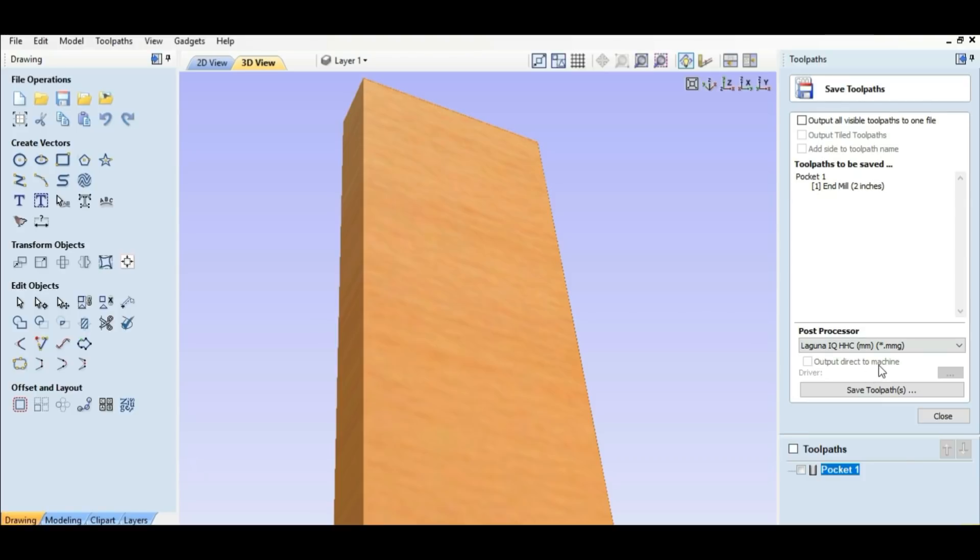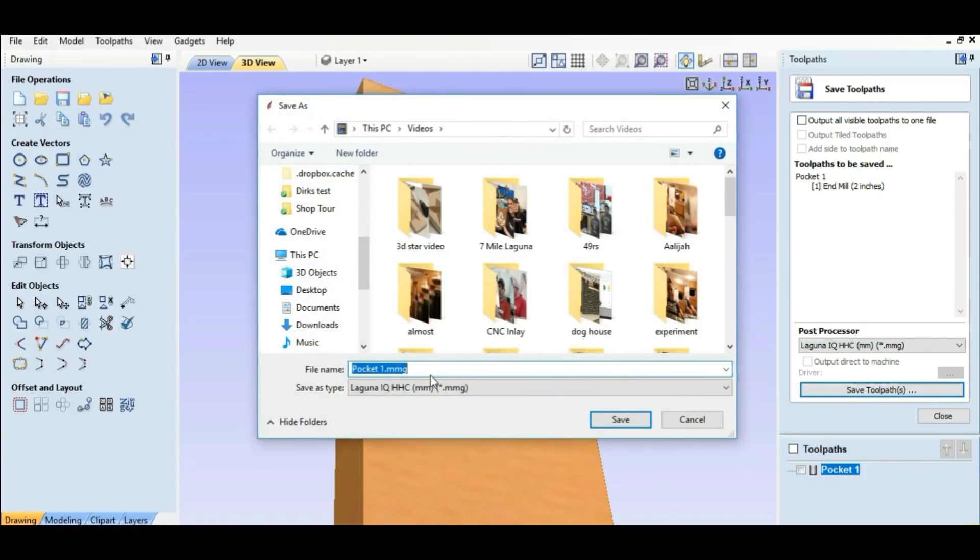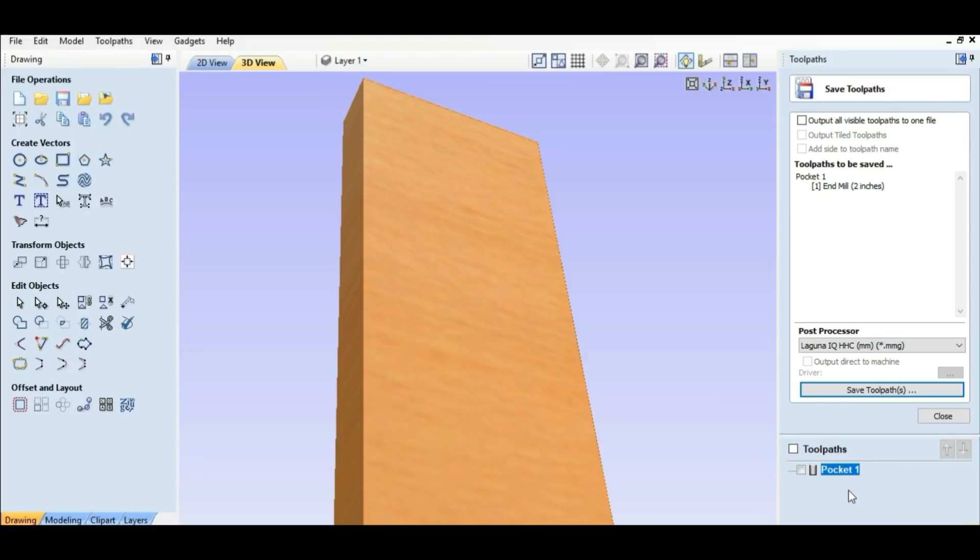Save toolpaths. There's only one so we can't mess it up. I'm going to say it's flat. We're going to save it. We're going to put it on jump drive and go out to the machine.